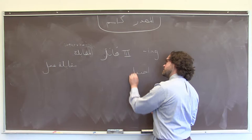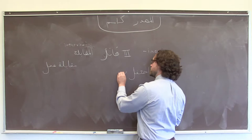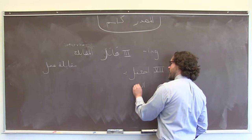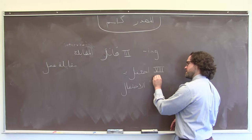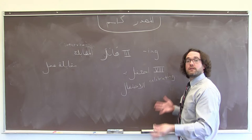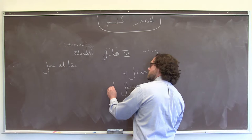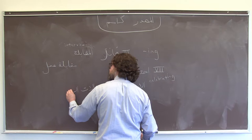A couple of other examples. We have the verb احتفل in Arabic, which means to celebrate or to have a party — if we're celebrating something in particular, we would have a بـ at the end. So the مصدر is الاحتفال, which we could render as 'celebrating' or maybe 'partying.' But it also means 'celebration.' So if we wanted to talk about Ramadan celebrations, we could say الاحتفالات الرمضانية.